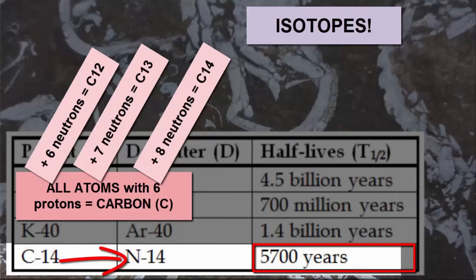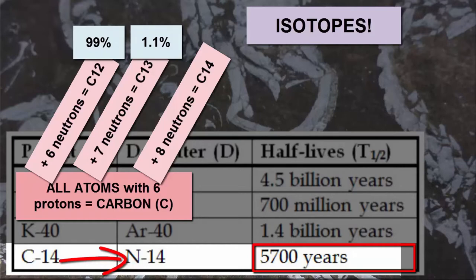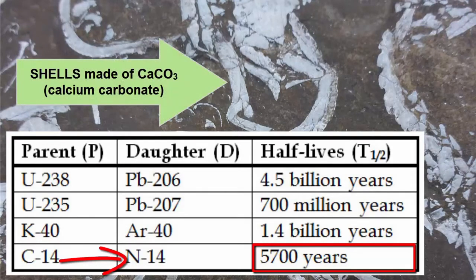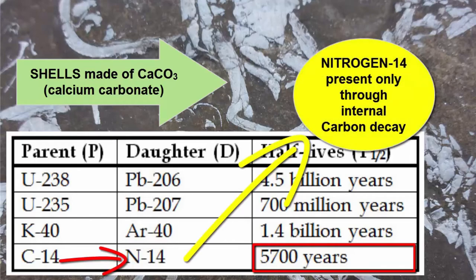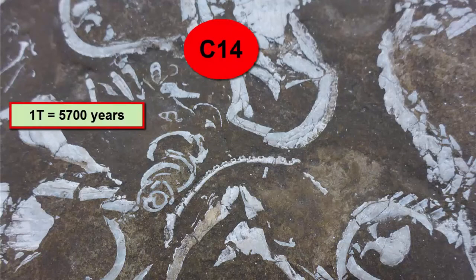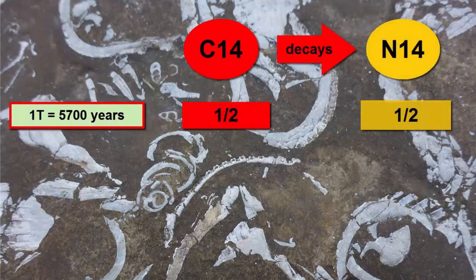Any naturally occurring substance with carbon in it will have about 99% carbon-12, 1.1% carbon-13, and some trace amounts of the radioactive carbon-14 isotopes. What makes carbon-14 and nitrogen-14 a very good isotope pair is that most substances that contain carbon in a structure, such as shells made of calcium carbonate, do not also have nitrogen in them. So any nitrogen-14 we see in the material will have come from the decay process. Every 5,700 years, half of the original carbon-14 has decayed to nitrogen-14.